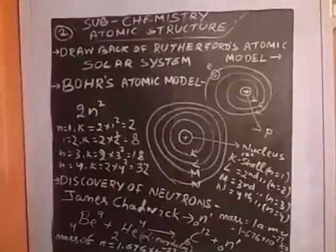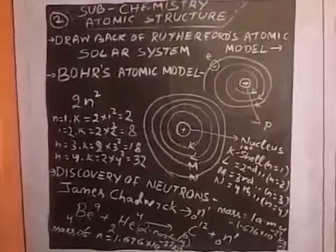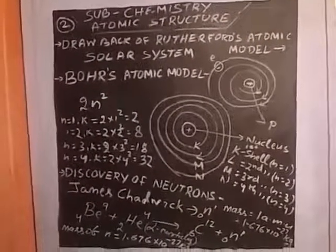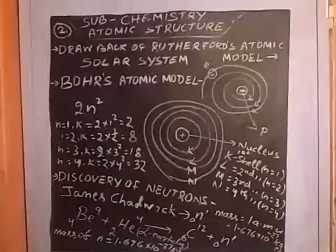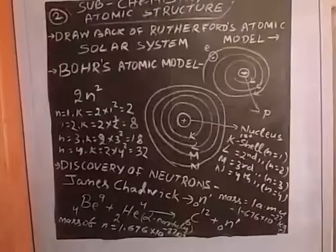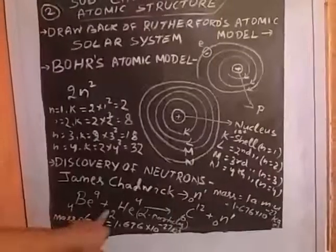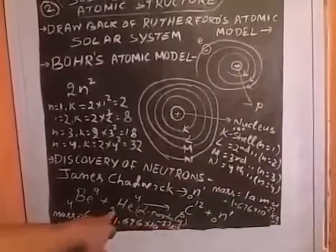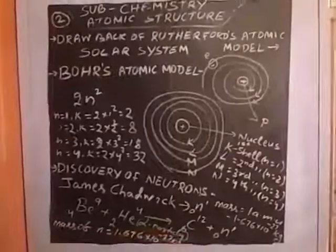Because mass of electron is very negligible, 1/1837, so it is not considered when you take the mass of the atom. So mass of atom means that is the mass of proton and neutrons.